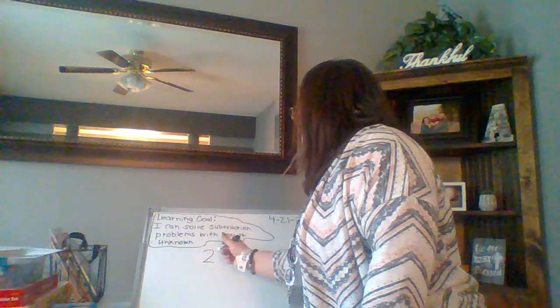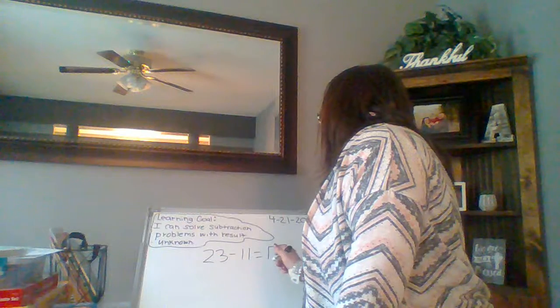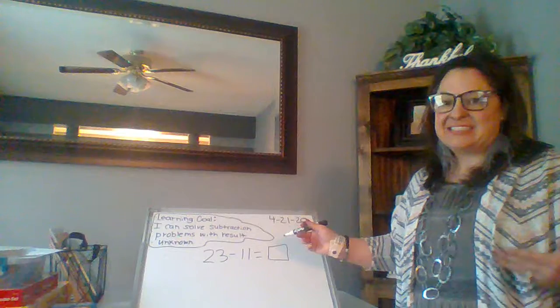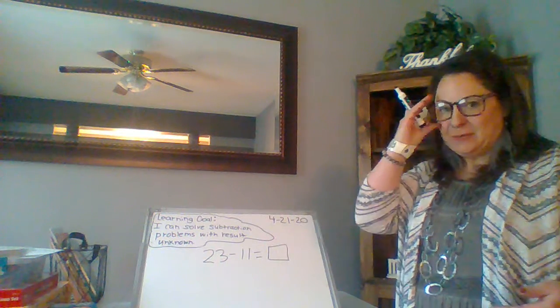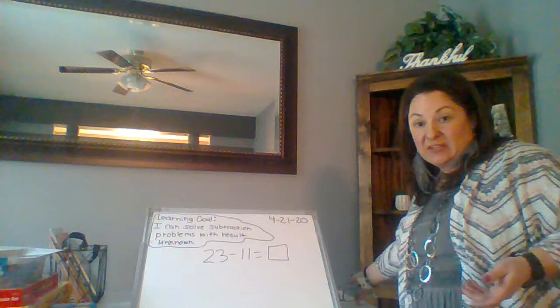If I wrote 23 minus 11 equals box, that is a subtraction problem with the result unknown. We don't know that last number, the final answer. Now there are lots of different ways that we can solve that, boys and girls.